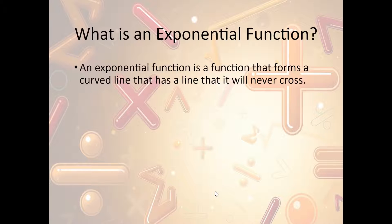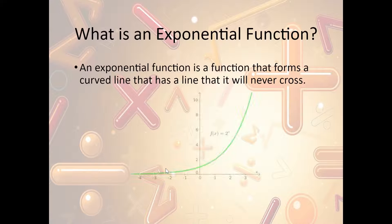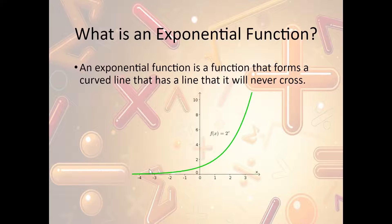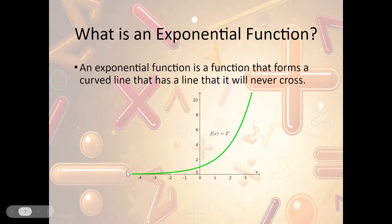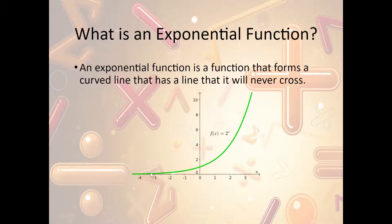What is an exponential function? An exponential function is a function that forms a curved line that has a line it will never cross. For instance, it's a single curve — it starts low and works its way up, or it could start high and work down. Notice the curve gets really flat near the x-axis and will never cross it — that's the asymptote. In the other direction, it keeps going and gets really steep.